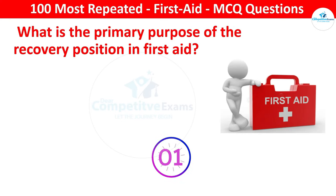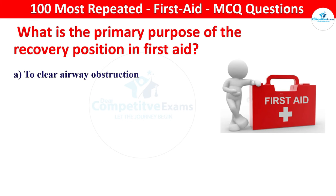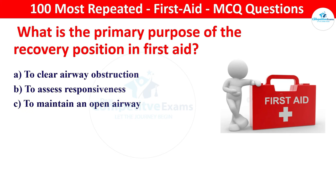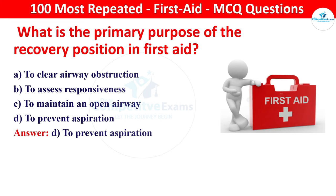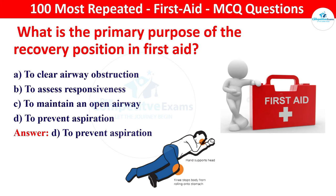What is the primary purpose of the recovery position in first aid? Your options: to clear airway obstructions, to assess responsiveness, to maintain an open airway, or to prevent aspiration. The right answer is to prevent aspiration. The recovery position helps to keep the airway clear and reduce the risk of aspiration in an unconscious person.